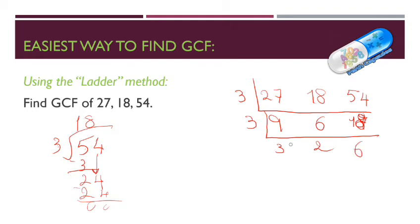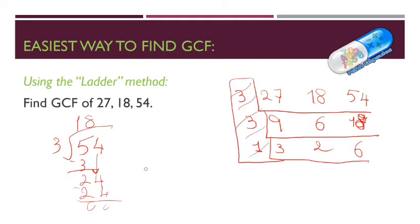Now we have 3, 2, and 6. Can all three numbers be divided by the same number? No, they cannot. So it can only be divided by 1. I will close the L like this. The greatest common factor will be 3 times 3 times 1, which equals 9. And this is the greatest common factor of these 3 numbers.